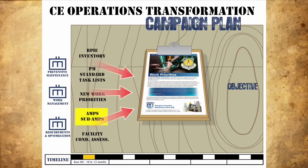Several major AMPs and sub-AMPs — Airfield and Transportation Networks AMP, Utilities AMP, and Service Contracts sub-AMPs — now fall under the operations flight, specifically in requirements and optimization. Informed discussions between craftsmen, engineers, and condition assessment teams will better determine overall base work requirements and where Ops work resources should best be applied for optimal return on investment.